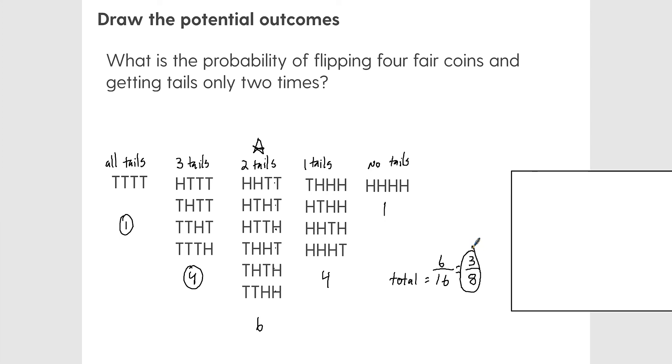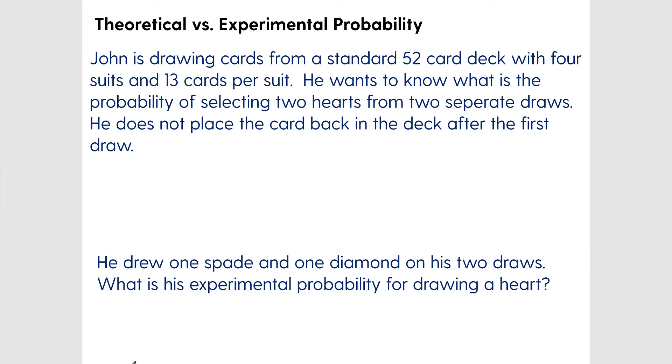Now, sometimes I've seen the difference between theoretical and experimental probability on the GED, and this can be a little confusing if you're not familiar with the difference between the two. The first problem is going to be theoretical, so we're sort of predicting or imagining what is possible. John is drawing cards from a standard 52-card deck with four suits, 13 cards per suit. He wants to know what is the probability of selecting two hearts from two separate draws. He does not replace the card back in the deck after the first draw.